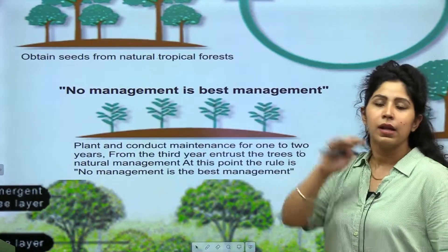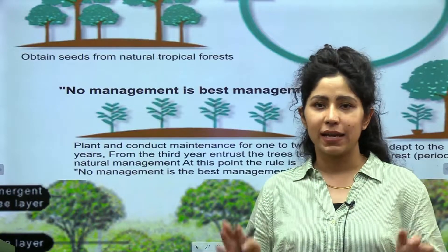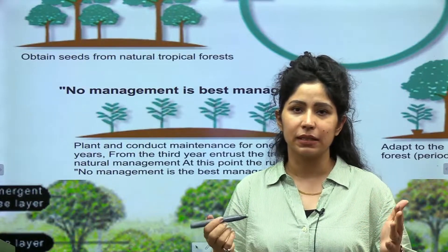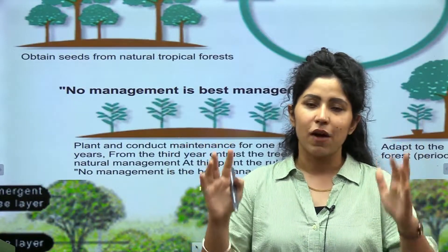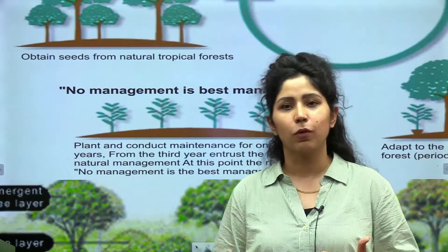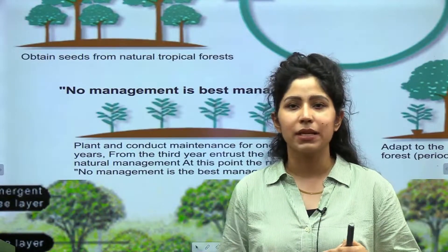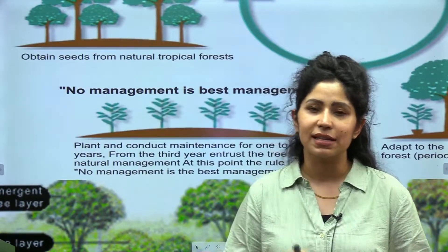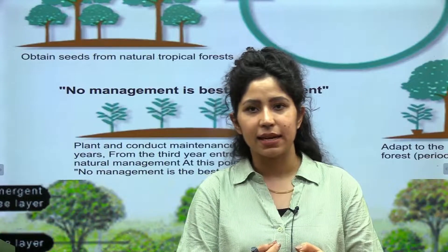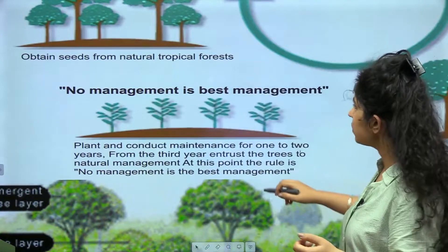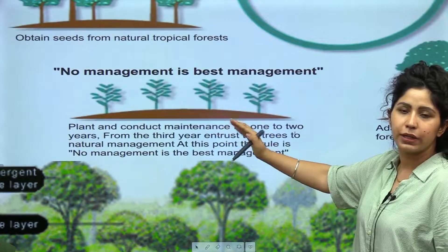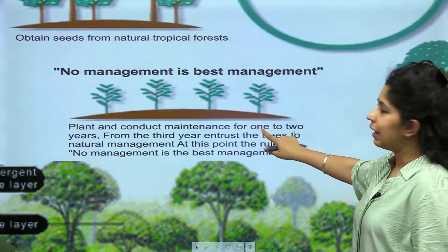When they have grown a little in the natural environment, you plant them on the land area you want to convert into a forest. The plantation method involves planting many saplings in a very small area — in just 1 square meter, 3 to maximum 4 saplings are planted. Since many saplings are planted in a small area, there are high chances some of them will survive and grow upwards.